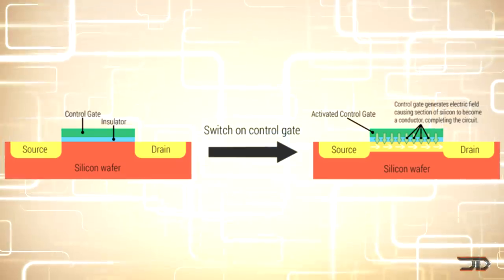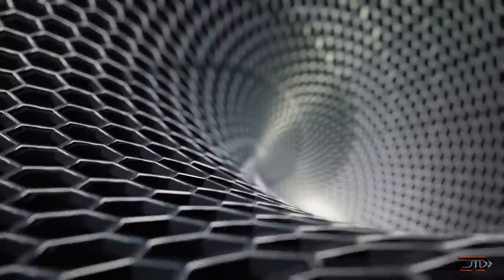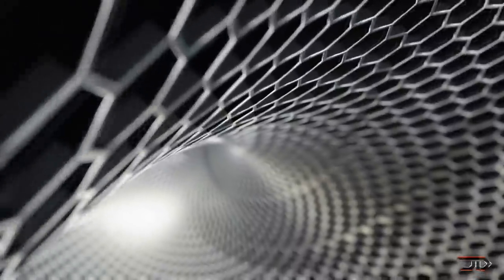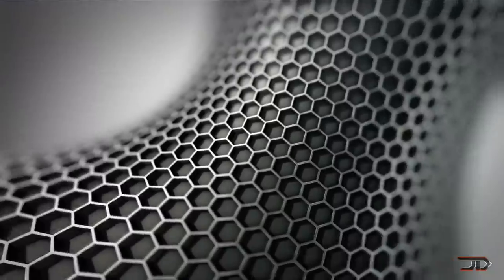But this also brings me to another material that I want to talk about, and that is graphene. Graphene is very good at conducting electricity, but it has no natural band gap, so it can't be naturally used as a transistor.